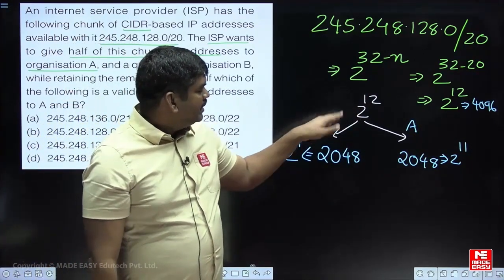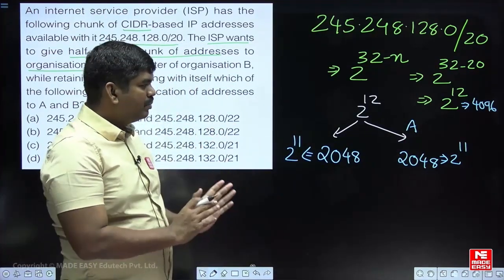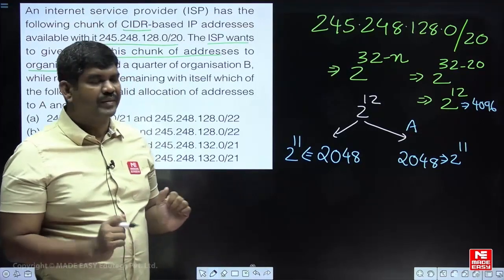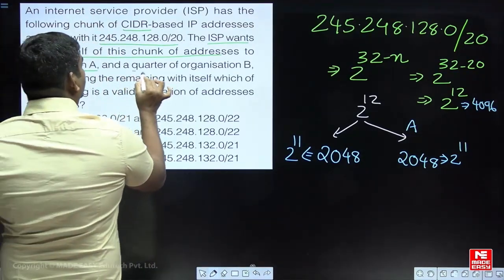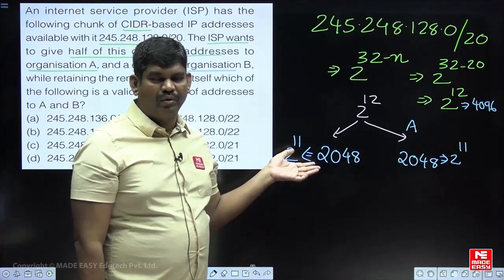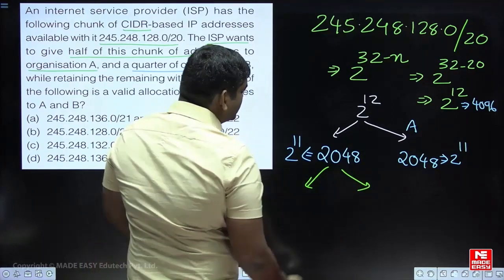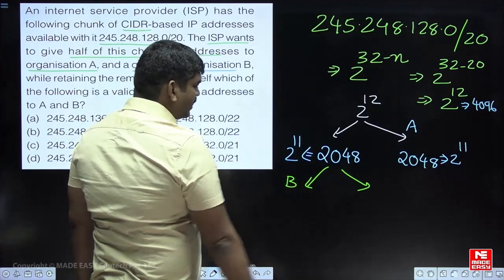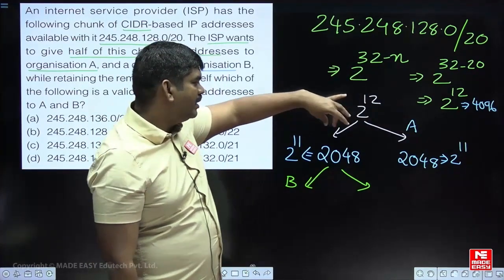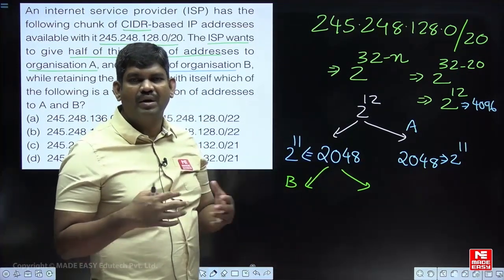Organization B is given a quarter of the total addresses. Once half is given to A, the remaining half is divided into 2 equal parts. If the total is n, dividing by 2 gives n/2, and dividing again gives n/4 — which is a quarter. So Organization B receives n/4 = 2 power 10 addresses, making the mask slash 22.